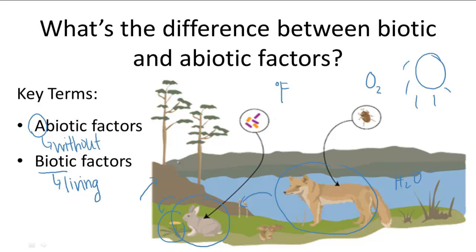These two factors work together to balance the ecosystem. When we talk about abiotic factors, we have to talk about ecosystems or higher levels of organization, because levels of organization below ecosystems only deal with the biotic factors. The abiotic environment supports organisms, and organisms contribute to and modify the abiotic environment.